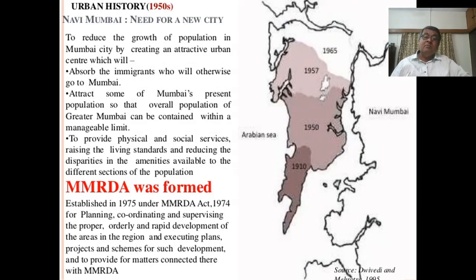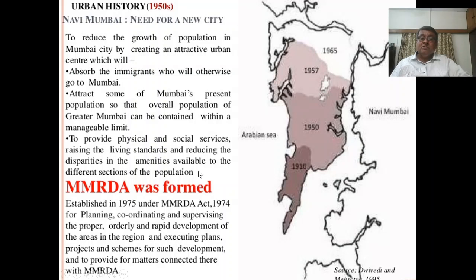Urban history: In the 1950s, Navi Mumbai was planned to reduce the growth of population in Mumbai city by creating an attractive urban center to absorb immigrants who would otherwise go to Mumbai, and to attract some of Mumbai's present population so that the overall population of Greater Mumbai can be kept within a manageable limit, providing physical and social services and raising living standards. MMRDA was formed in the year 1975 under the MMRDA Act 1974 for planning, coordinating, and supervising the proper, orderly, and rapid development of the areas in the region.